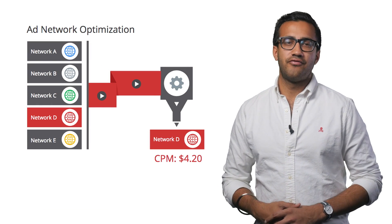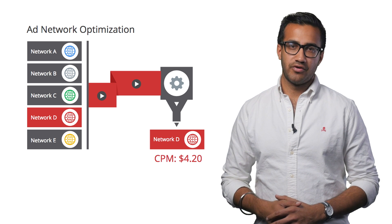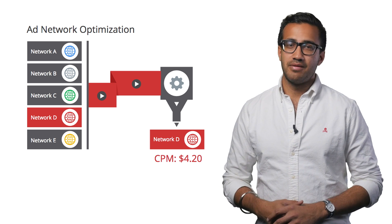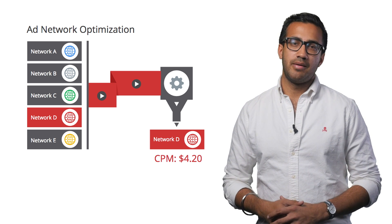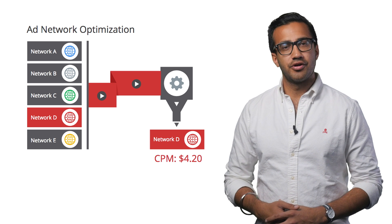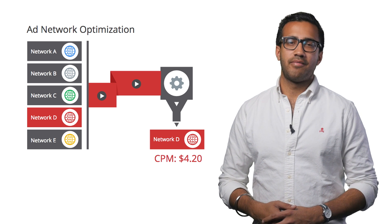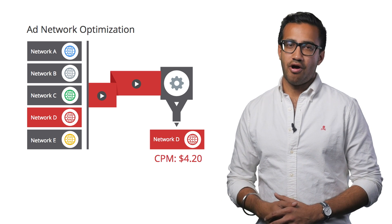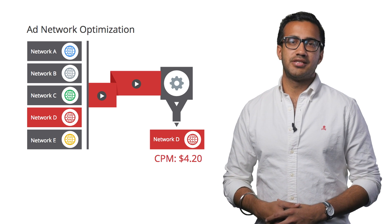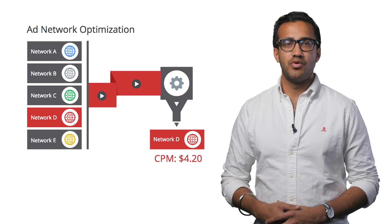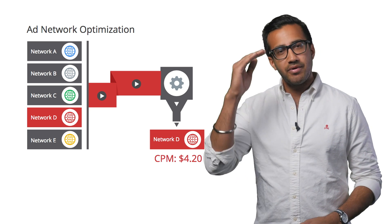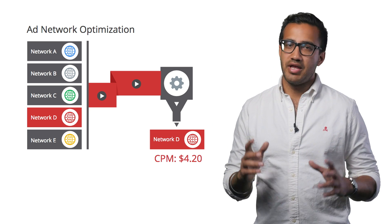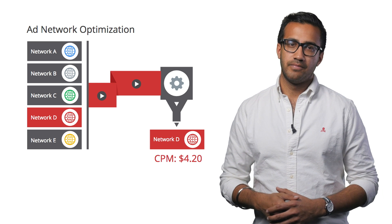Because we know you need to focus on building a great app experience first, and updating CPMs can be extremely time-consuming, we created a feature called Ad Network Optimization. Ad Network Optimization automatically updates network CPMs within your mediation stack and optimizes the order of those networks based on the eCPM they are giving you.